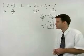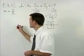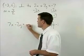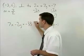The equation of this line is 7x - 2y = -33.